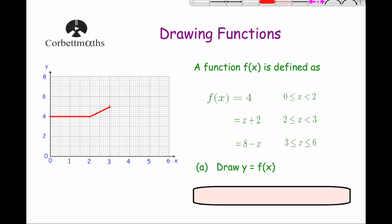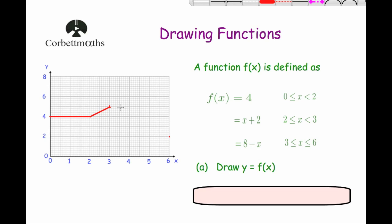For our last section, putting 3 in gives 8 subtract 3 which is 5, so it joins there. Putting in 6 gives 8 subtract 6 which is 2. We know it's a straight line with a gradient of negative 1. Putting in 6 gives us a value of 2, so we join them up and that's what the function looks like.